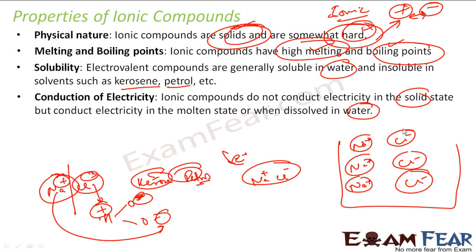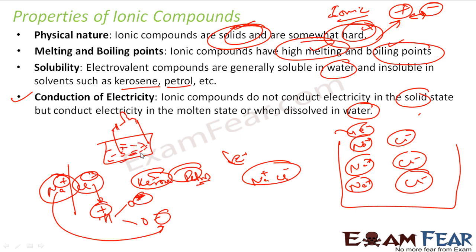Now since it dissolves into ions, when extra electrons come, it has a carrier to pass electricity. That is why ionic compounds, when solid, do not conduct electricity. For example, you take solid salt, put two wires with a battery and a bulb — all solid salt, no water — it will not glow. But the moment you put water in, Na plus and Cl minus ions are freed and these ions help in conduction of electricity. Thus, ionic compounds do not conduct electricity in solid state, but when in molten state or dissolved in water, they conduct electricity.